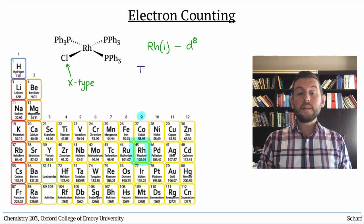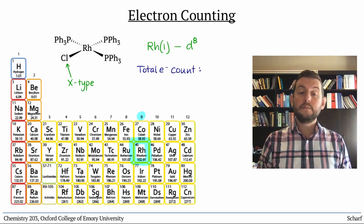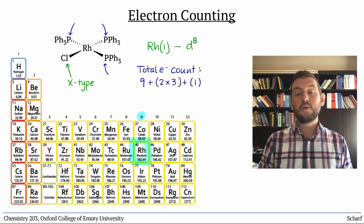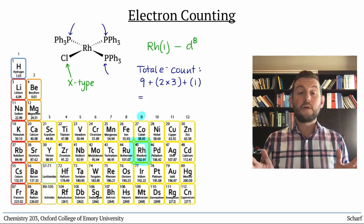To determine the total electron count, we start with the rhodium's nine valence electrons, adding two for each of the L-type ligands, here the phosphines, one more for the X-type ligand, chloride. There's no overall charge, so this is a 16-electron complex.